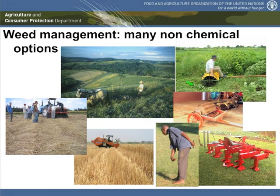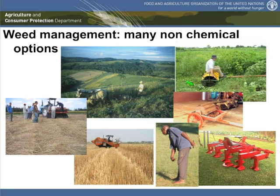We can also use a tool very characteristic for conservation agriculture called the knife roller, seen in the upper right corner. This tool allows you, if applied on a cover crop at the right stage — after flowering but before the grain matures — to kill many crops without the need for any chemicals. By killing the cover crop this way, it creates a mulch that will suppress all other weeds, giving complete weed control without chemicals.